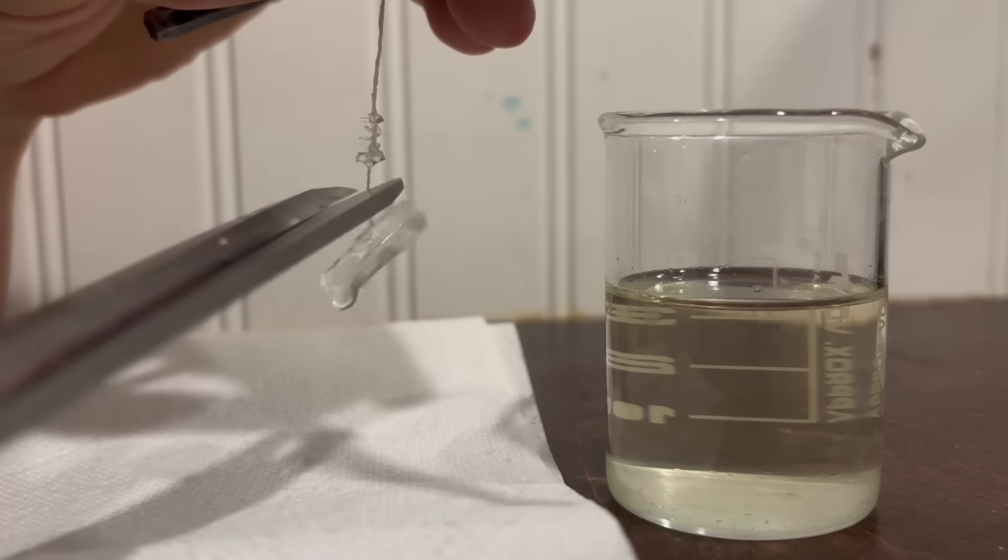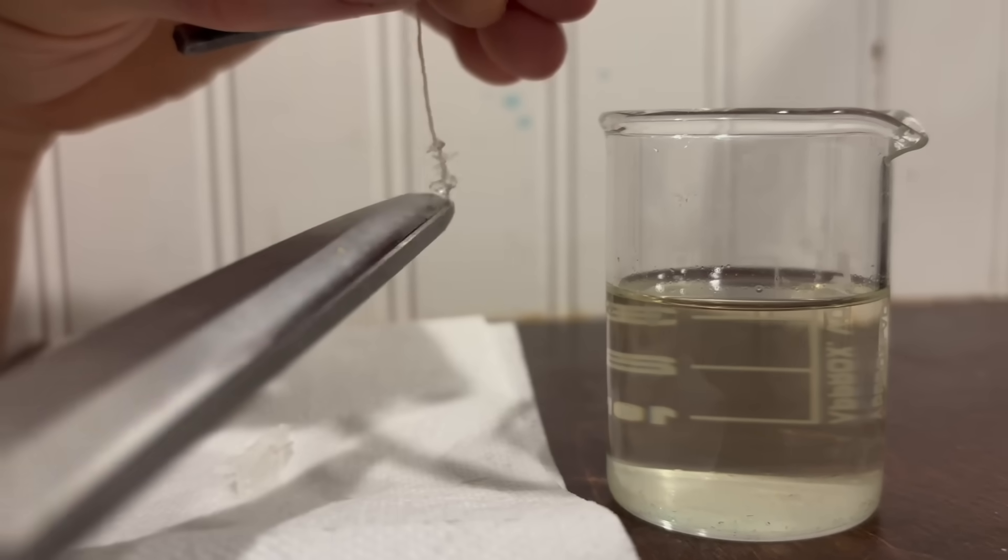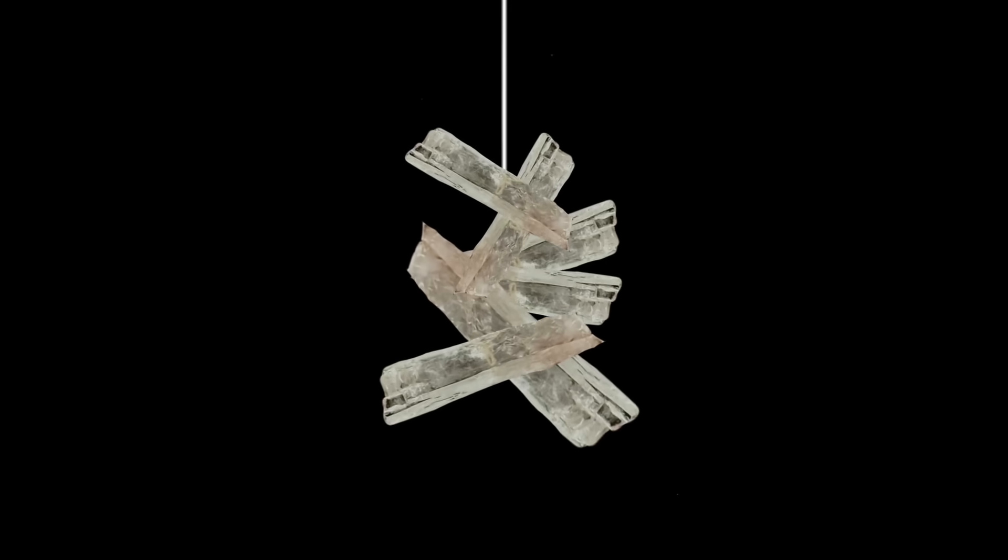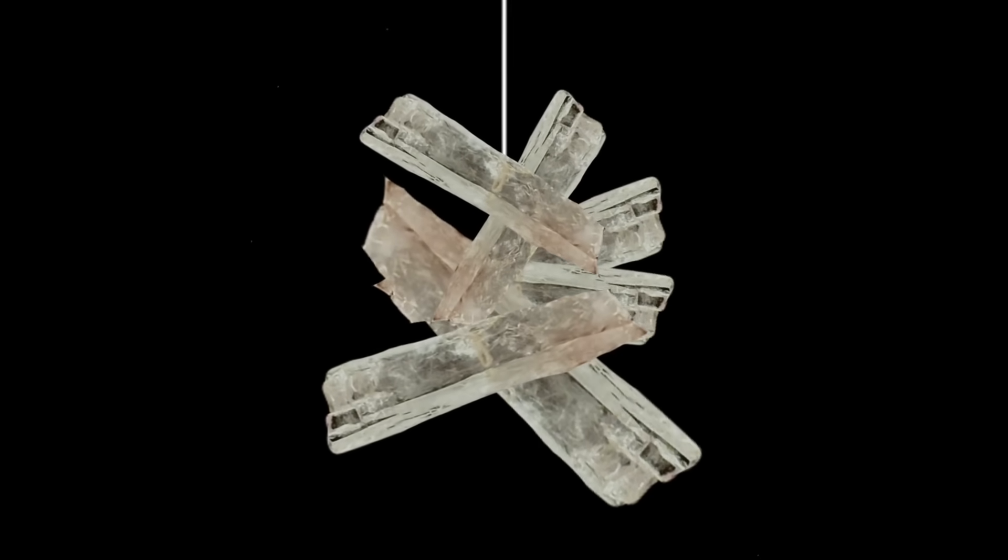So I snipped the crystal off of the string and inserted the string back into the solution. Now with the lack of a large individual seed crystal, many small crystals can nucleate and grow on this string, eventually fusing together and creating a polycrystal. And so now the only thing left to do was wait.